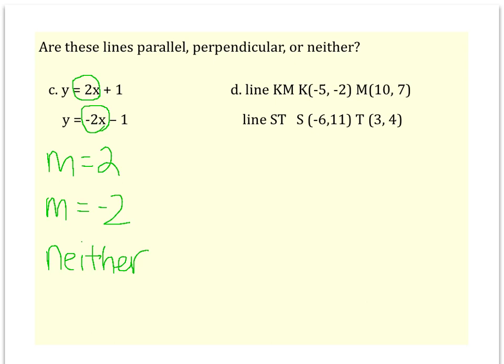The second example is a little bit different, because they don't give us the lines in slope-intercept form. They just tell us that the lines go through certain points. So line KM goes through point K(-5, -2) and M(10, 7). What we're going to have to do is calculate the slope of line KM and calculate the slope of line ST.